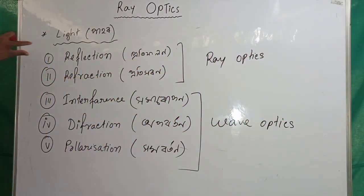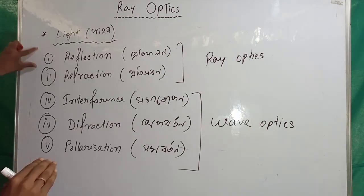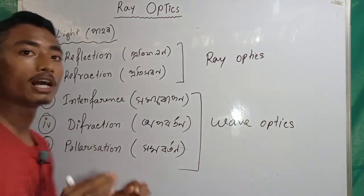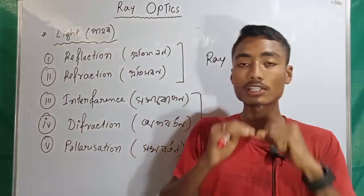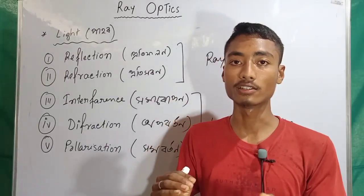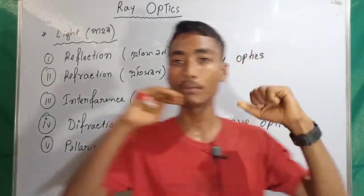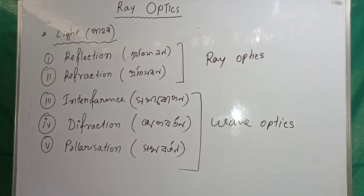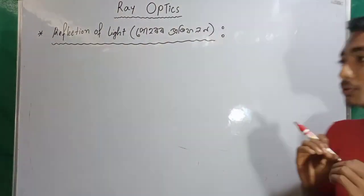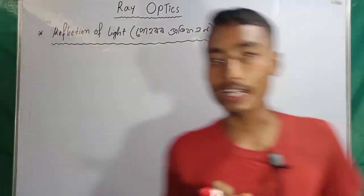Now, number one — the first point is reflection. We have understood the concept. Let me give a brief explanation with a diagram.